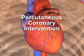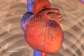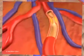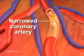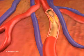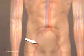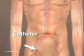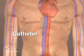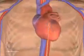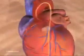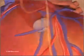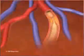Percutaneous coronary intervention, also known as coronary angioplasty, opens narrowed coronary arteries. A small, hollow tube called a catheter is inserted into an artery in the groin or arm and threaded to the affected artery.